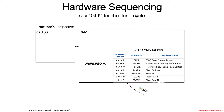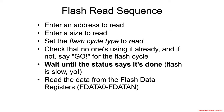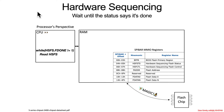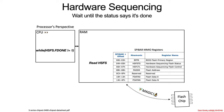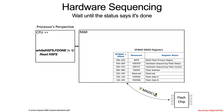And then boom, some magic happens. Now you have to wait until the status says it's done, and you do that by checking hardware sequencing flash status register FDONE. If it's not equal to 1, then you need to keep waiting and checking and waiting and checking.